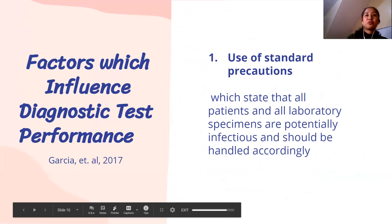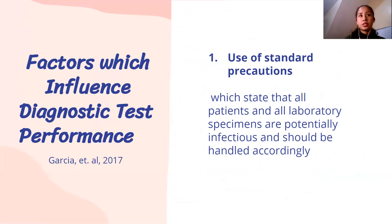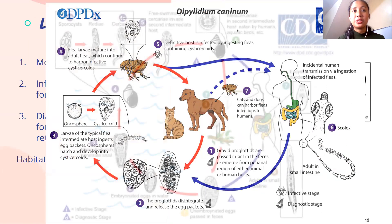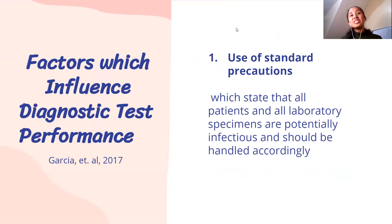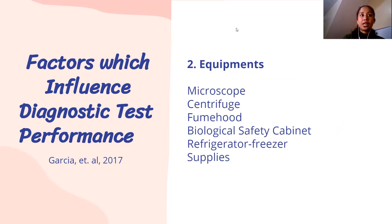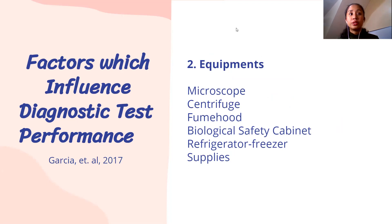What are the factors that influence diagnostic performance? First is the use of standard precautions — treat all specimens, whether blood or any other, as potentially infectious and handle accordingly. Second, good quality equipment matters: microscope, centrifuge, fume hood. A biological safety cabinet is not required in the parasitology laboratory but can be used if budget allows — specifically class 2.